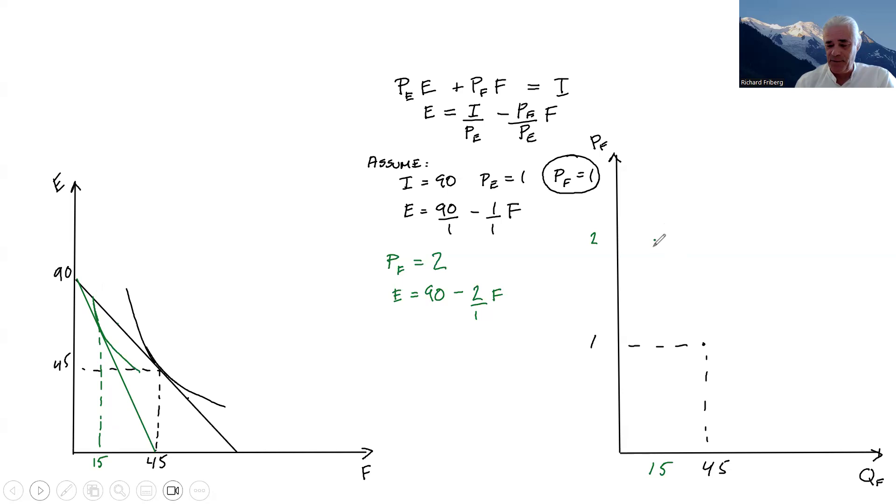15 again, it's not important that it's 15. Important point is that there is an optimal solution to this. And we can, given the price of 2, how much is consumed or demanded? Well, 15 units.